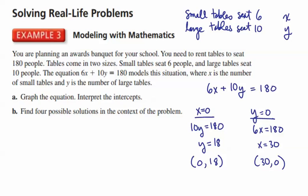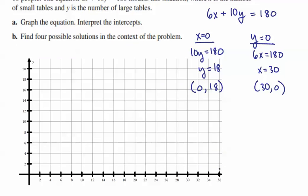Now, all we need to do is graph those, and we want to find four possible solutions in the context of this problem. So, I'm going to scroll down to the graph. All right, so when we bring the graph into this, we're going to first start by plotting our two intercepts. x is equal to zero, y is equal to 18. So, x is zero, y is 18, is going to be that point right there. And then x is 30, y is zero, and that's going to be that point right there.